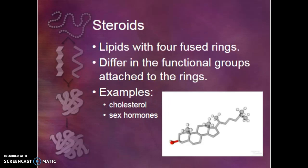Steroids are yet another type of lipid that we hear a lot about. They're four fused rings, really big molecules. Things like our sex hormones are steroids. Things like cholesterol are steroids. What makes one steroid different from another is the functional groups that are attached to those rings.